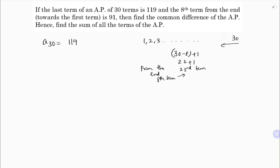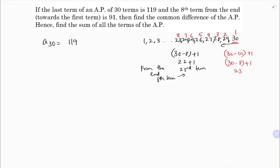Counting from the end: 30, 29, 28, 27, 26, 25, 24, 23 — that's 1, 2, 3, 4, 5, 6, 7, 8. So the 8th term from the end is the 23rd term. The formula is: n minus k plus 1, so 30 minus 8 plus 1 equals 23.